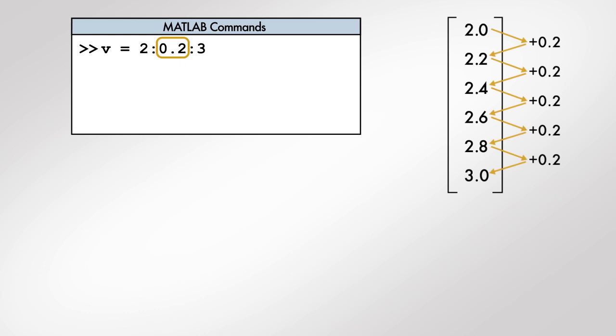Note that the number of elements in the resulting vector depends on the last value in the command. For example, if we change the last value to 3.5, the vector will contain two more elements.